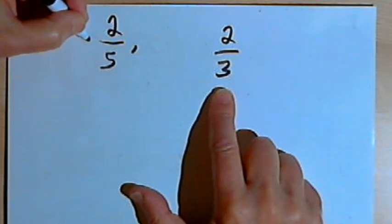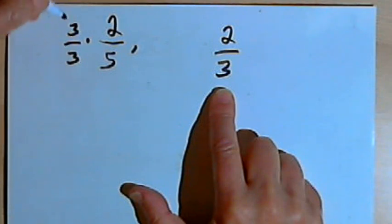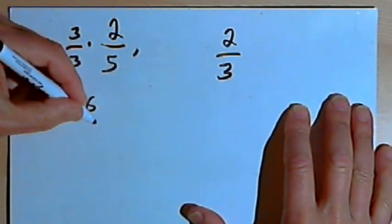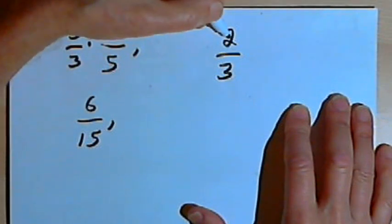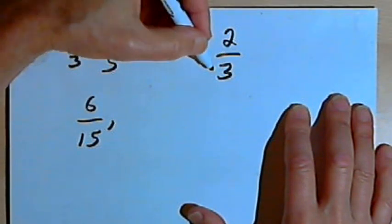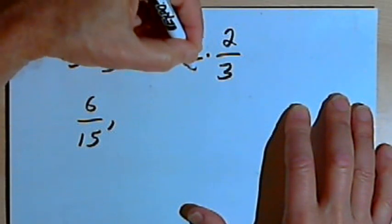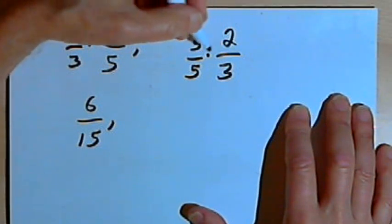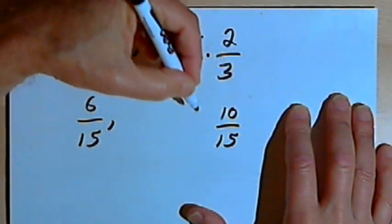So that means I'll take 2 over 5 and multiply it by 3 over 3, which is just a way of multiplying it by 1. That's going to turn it into 6 over 15. Then I'll take the 2 over 3, and I want to give that a denominator of 15. So I'm going to multiply that by 5 over 5, and that fraction will become 10 over 15.